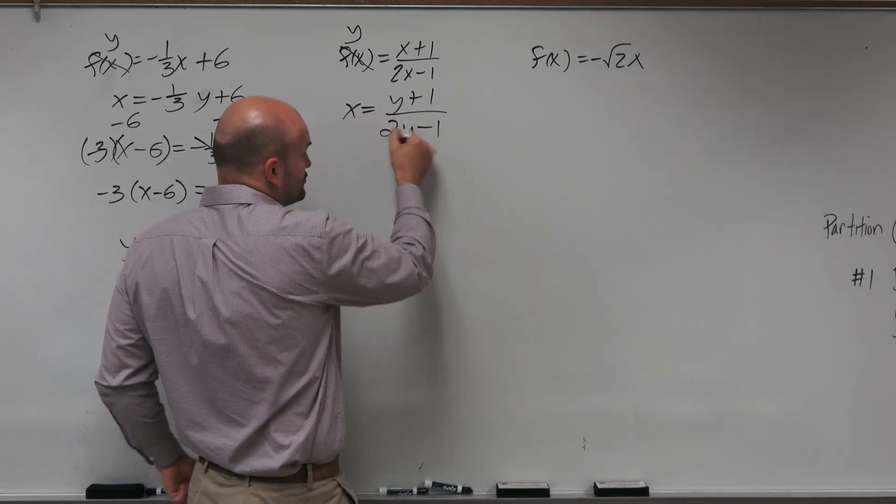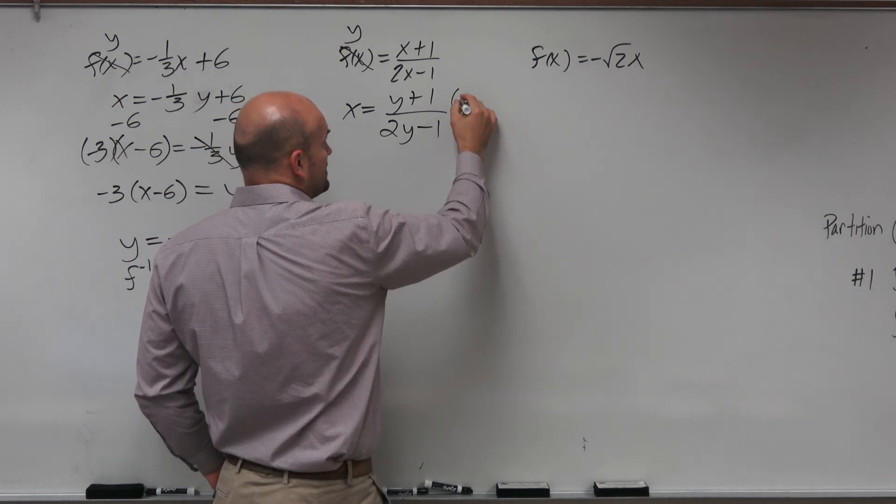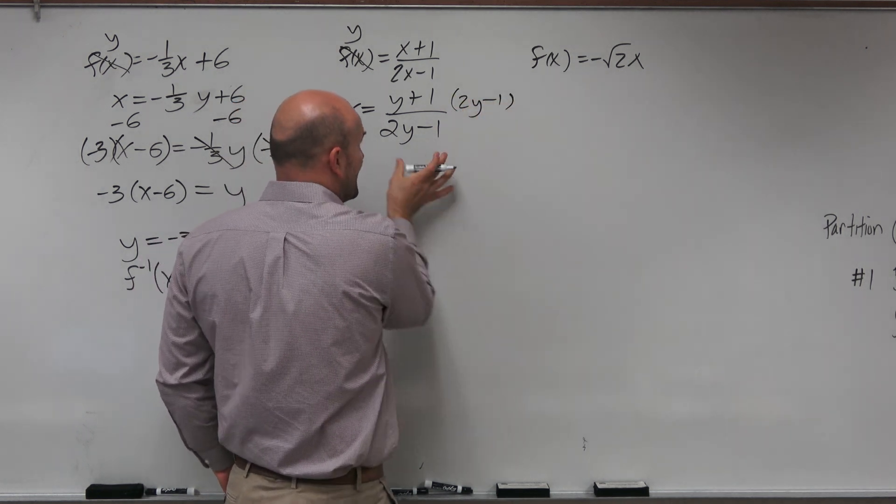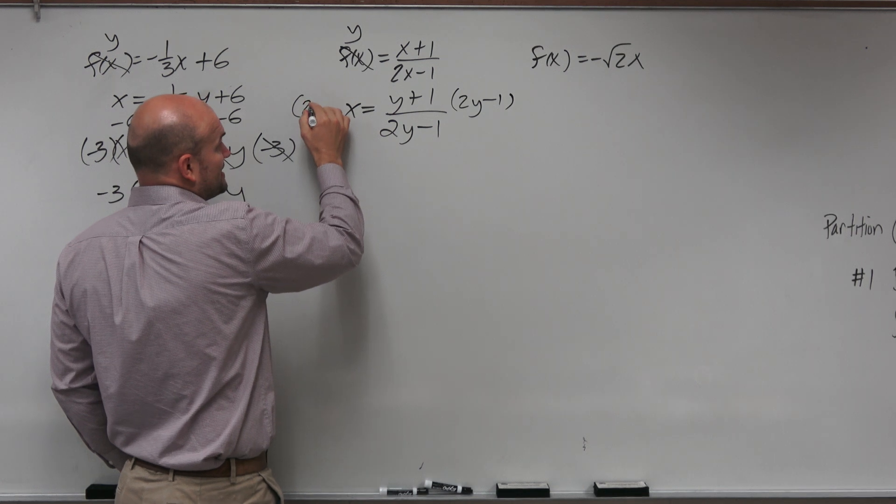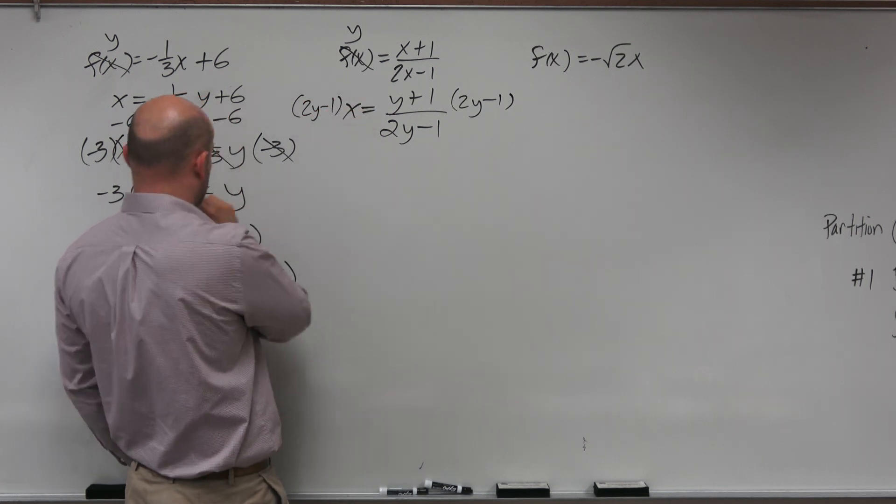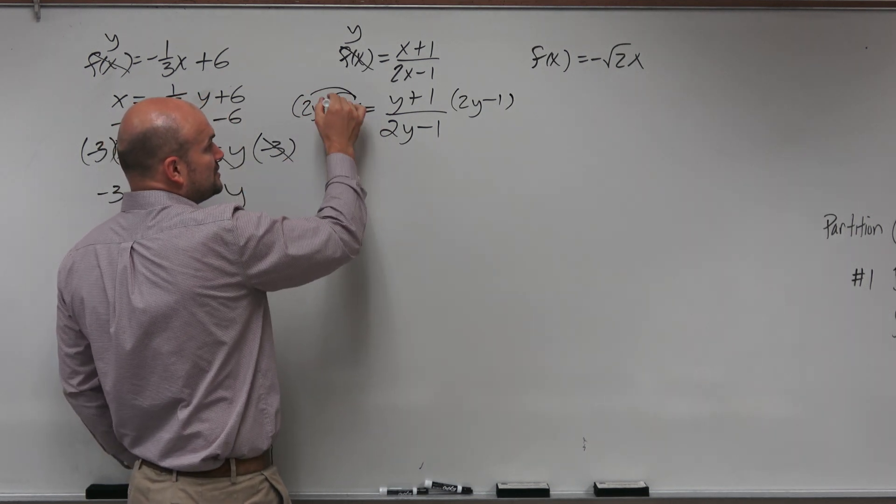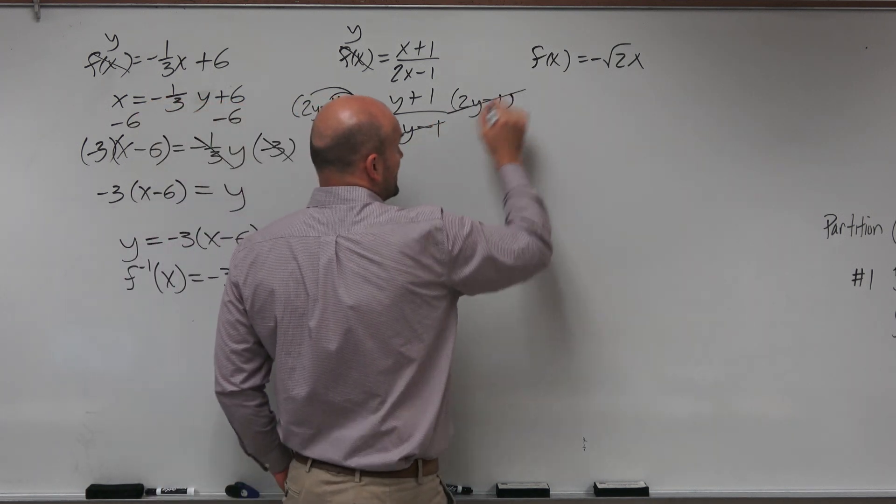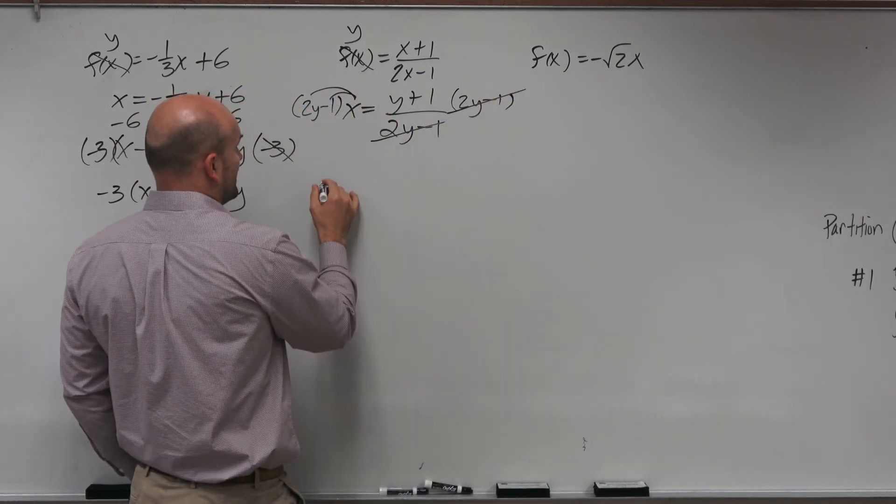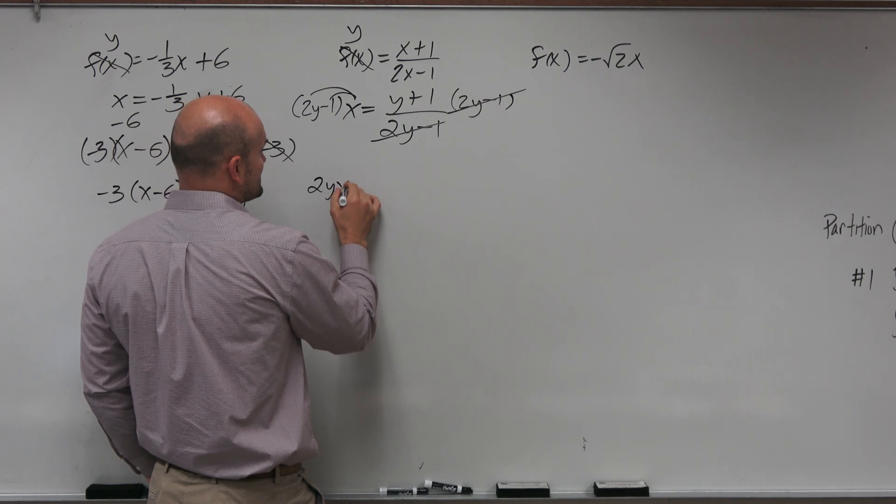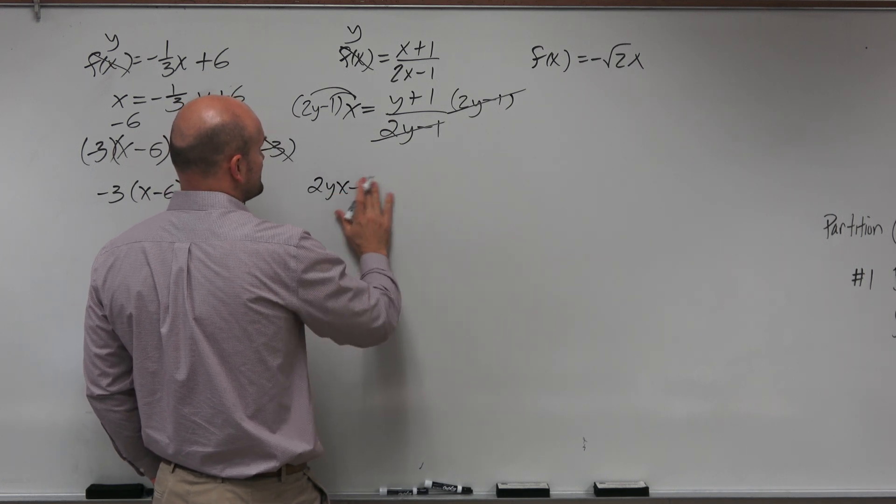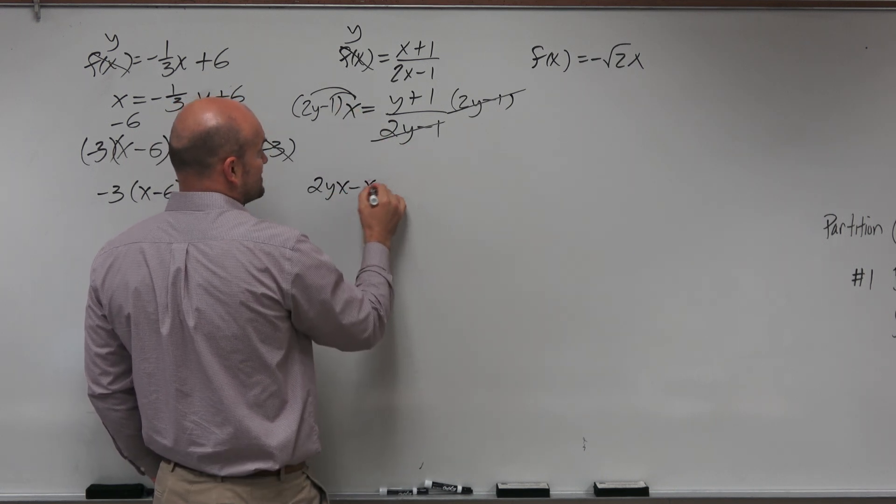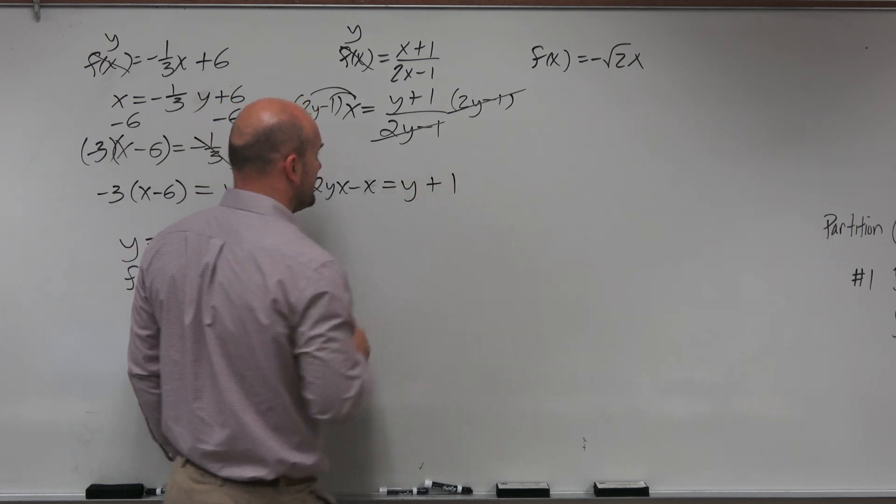So to get my 2y minus 1 off the denominator, I'm going to multiply by 2y minus 1. Again, I'm using parentheses because I don't want to make that first mistake, right? We don't want to make the mistake over here. Now I am going to distribute this. And then these divide out because of the division property. And that's going to leave me with 2yx minus x equals y plus 1.